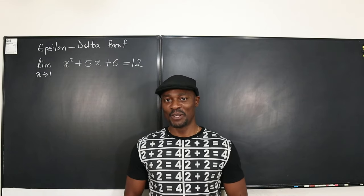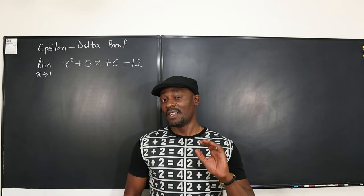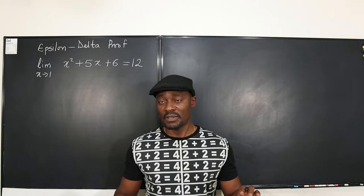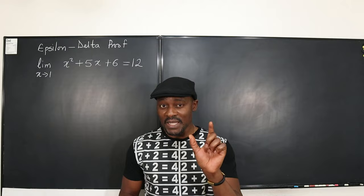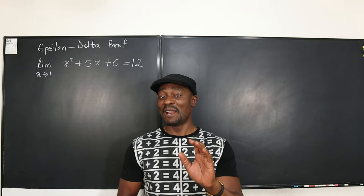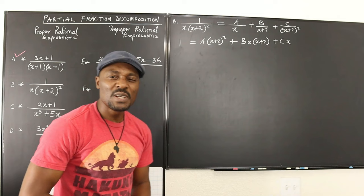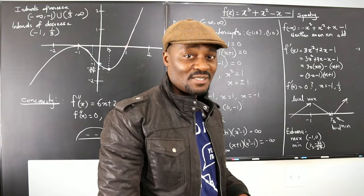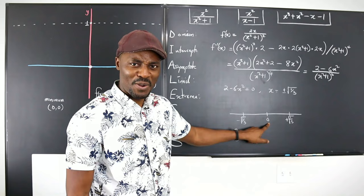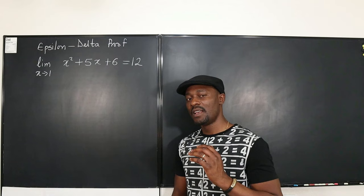Welcome to another video. This is the delta-epsilon proof for a quadratic limit. The last video covered a linear function, but now we have a quadratic. There may appear to be two answers, so we might have to make two suggestions for what delta would be — something on the left or something on the right. We'll make it as simple as possible.